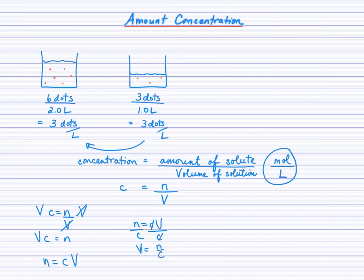From n equals c times V, we can isolate V by dividing by c and we'll finish with V equals n over c. So when you know the moles and concentration, you can solve for volume. When you know the concentration and volume, you can solve for moles. When you know the moles and volume, you can solve for c.